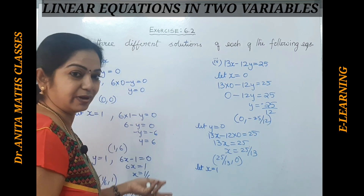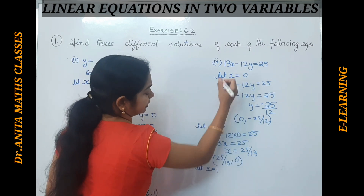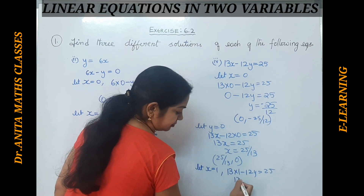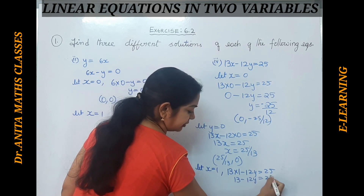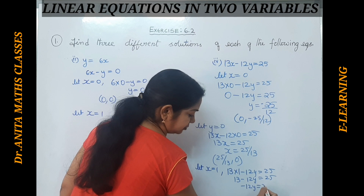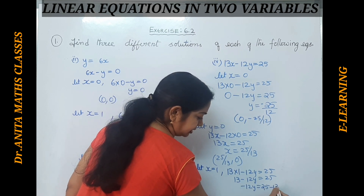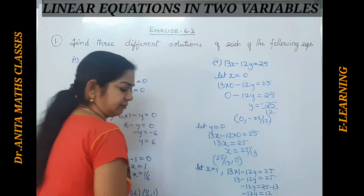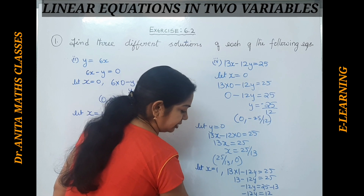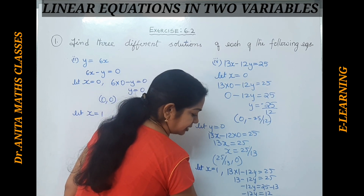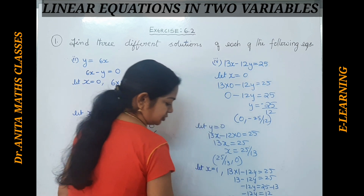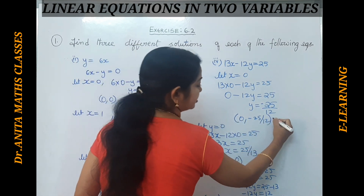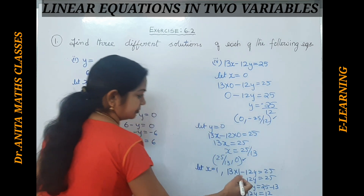Let x equal to 1: 13 into 1 minus 12y equals 25, so 13 minus 12y equals 25, giving minus 12y equals 12, so y equals minus 1. The ordered pair is (1, -1). So the three solutions are: (0, -25/12), (25/13, 0), and (1, -1). Please pause and note it down.